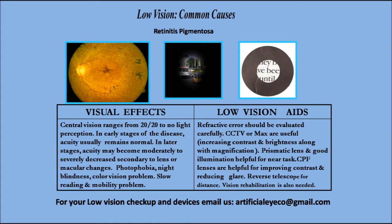Retinitis pigmentosa — what are the visual effects? Central vision ranges from 20/20 to no light perception. In early stages, acuity usually remains normal. In later stages, acuity may become moderately to severely decreased secondary to lens or macular changes. Symptoms include photophobia, night blindness, color vision problems, slow reading, and mobility problems.